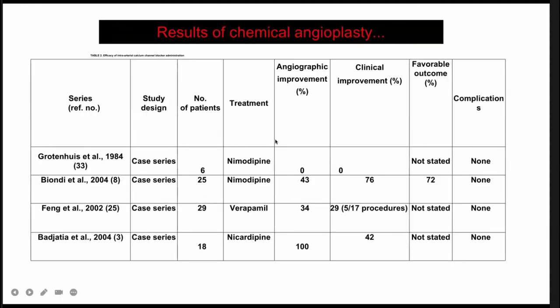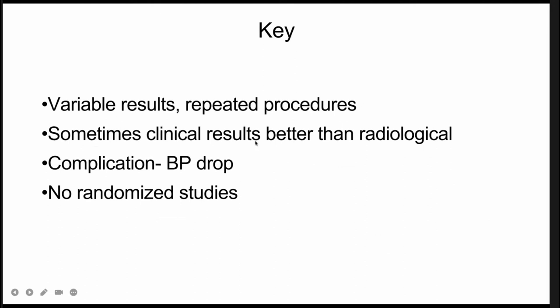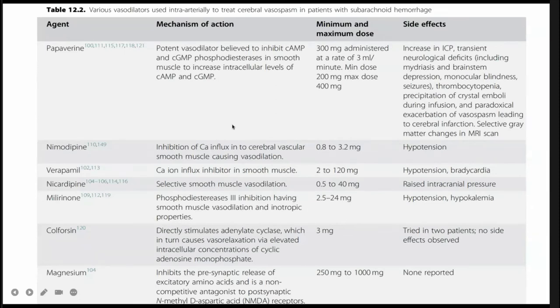In summary of chemical angioplasty agents: nimodipine, verapamil, and nicardipine all show varying results across studies and repeated procedures are required, unlike angioplasty. Nimodipine shows better clinical results even if radiological outcomes are modest. Main complications include hypotension, and no randomized controlled studies compare the efficacy of all these drugs. Papaverine is no longer used. Colforserin, an adenylate cyclase stimulator, and magnesium are also not clinically effective.